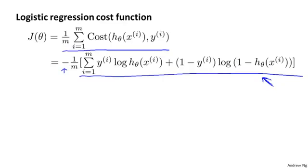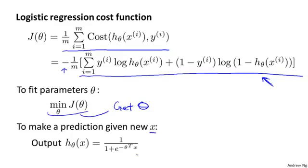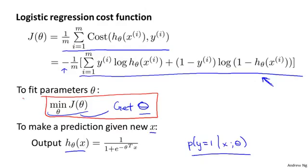Given this cost function, in order to fit the parameters, what we're going to do is try to find the parameters theta that minimize J(theta). So if we try to minimize this, this would give us some set of parameters theta. Finally, if we're given a new example with some set of features x, we can then take the thetas that we fit to our training set and output our prediction as this. Just to remind you, the output of my hypothesis I'm going to interpret as the probability that y is equal to 1, given the input x and parameterized by theta. But just think of this as my hypothesis estimating the probability that y equals 1. So all that remains to be done is figure out how to actually minimize J(theta) as a function of theta so that we can fit the parameters to our training set.